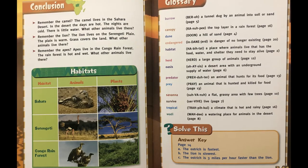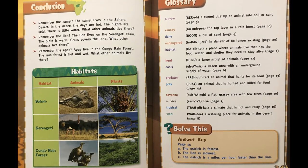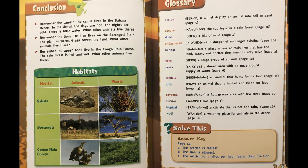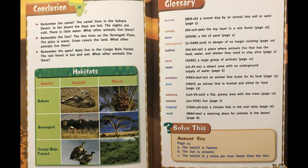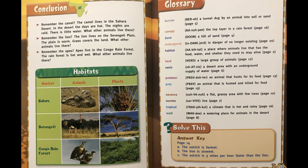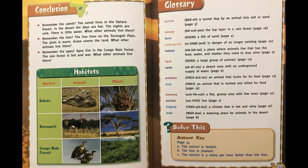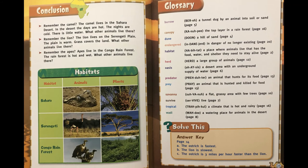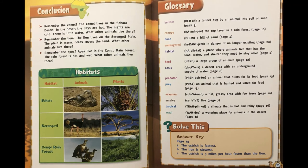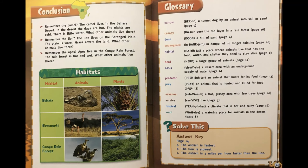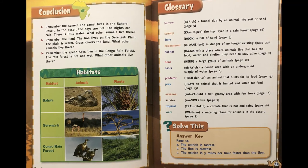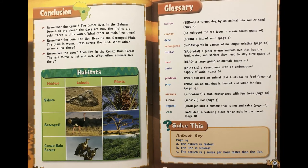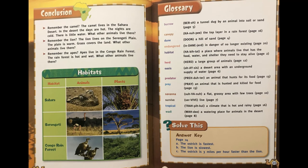Conclusion. Remember the camel? The camel lives in the Sahara Desert where days are hot, nights are cold, and there is little water. Remember the lion? The lion lives on the Serengeti Plain where it is warm and grass covers the land. Remember the apes? Apes live in the Congo Rainforest where it is hot and wet. You can see a chart that gives us habitats and the animals and plants that live there. The glossary tells you some of our keywords and what they mean.